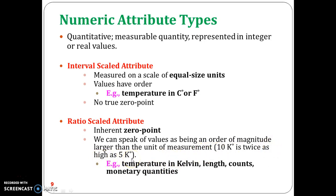This means 10 Kelvin is 2 times 5 Kelvin — measured from 0 to 5, twice. You can include the inherent zero value in ratio-scaled attributes. That covers the ratio-scaled attributes.